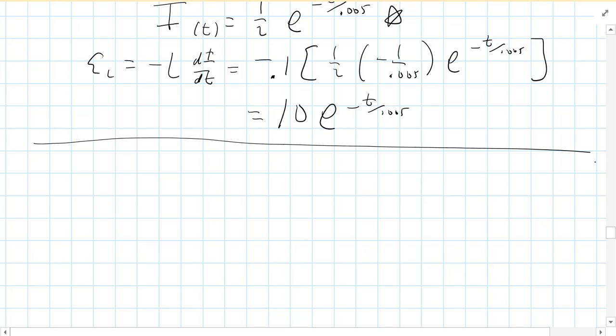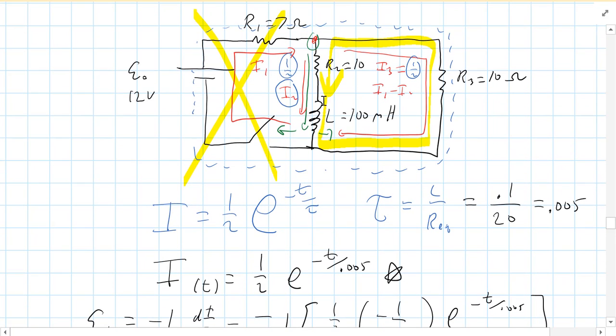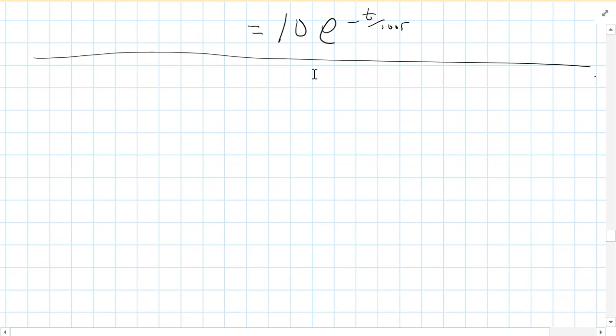Now, the last thing we're going to do is when we open that switch, a finite amount of current is going to flow through the inductor before current stops flowing. So what we're going to calculate is how much charge flows through the inductor.